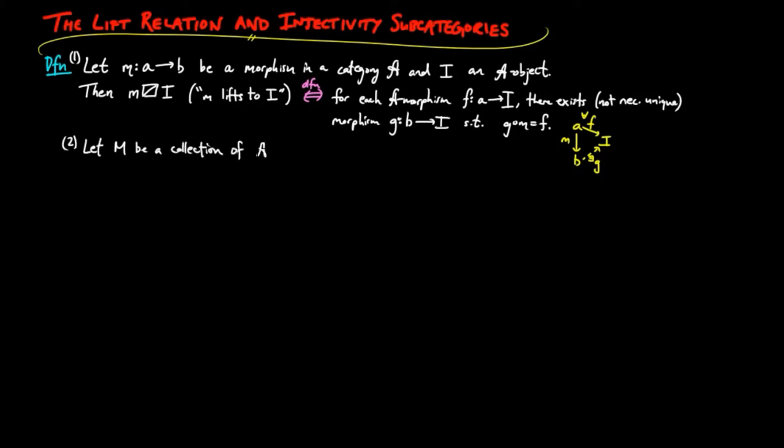Let M be a collection of A morphisms. An A object I is M-injective, provided for each morphism M in M, M lifts to I.